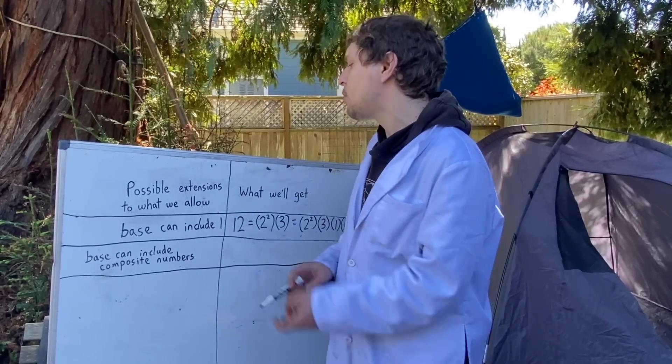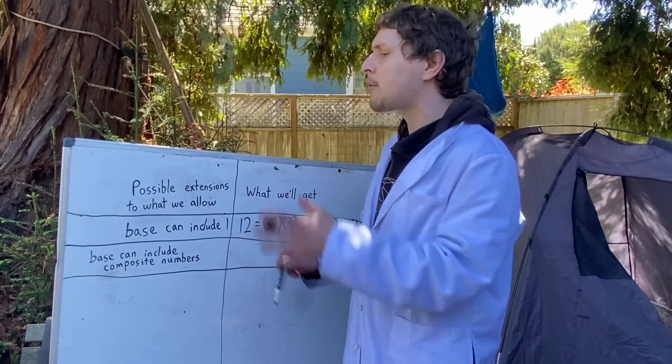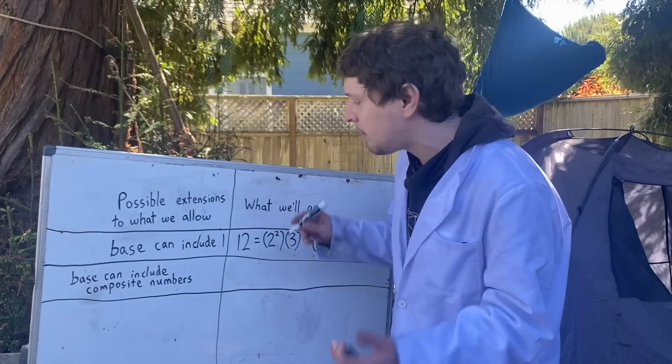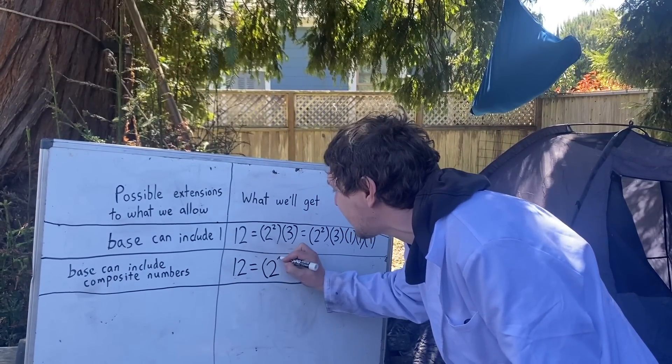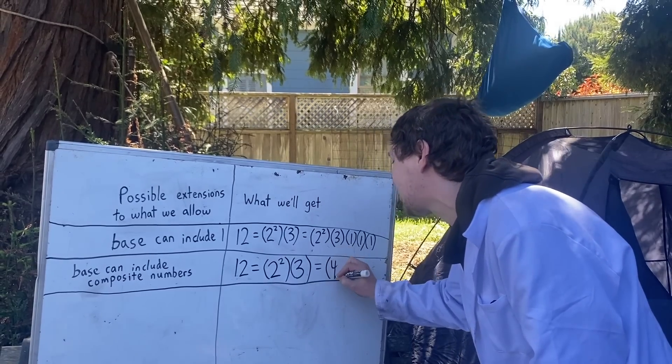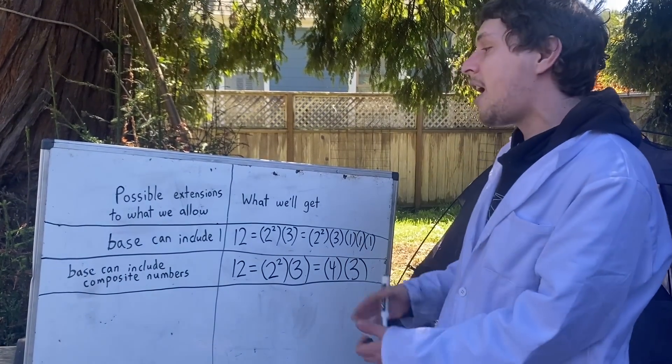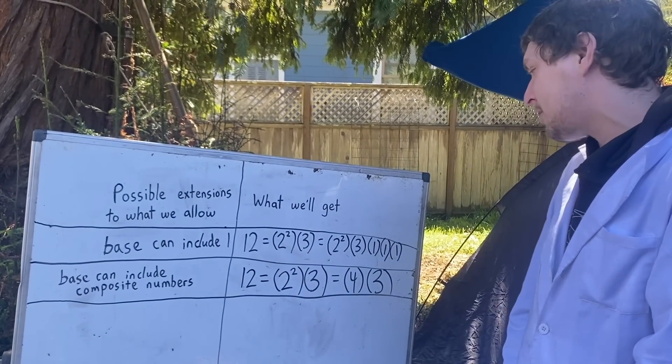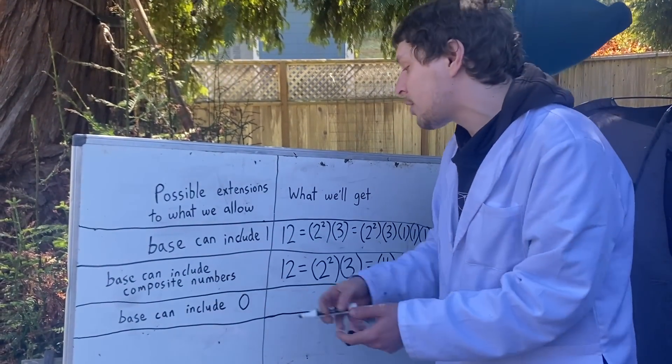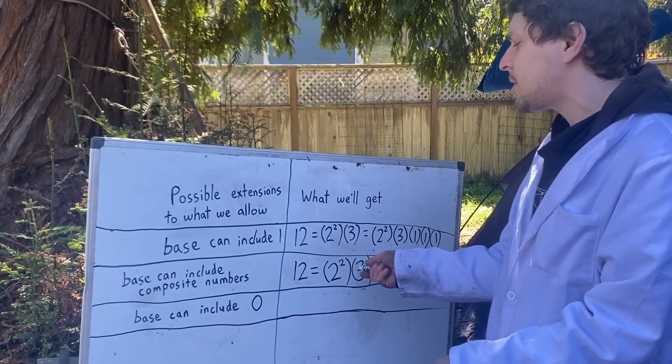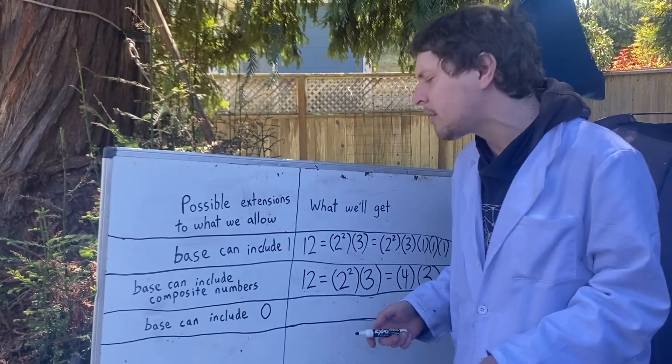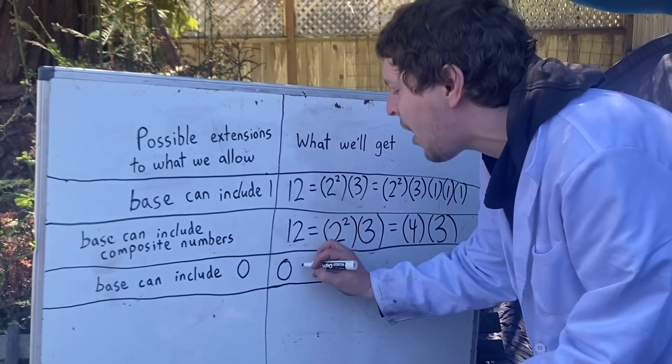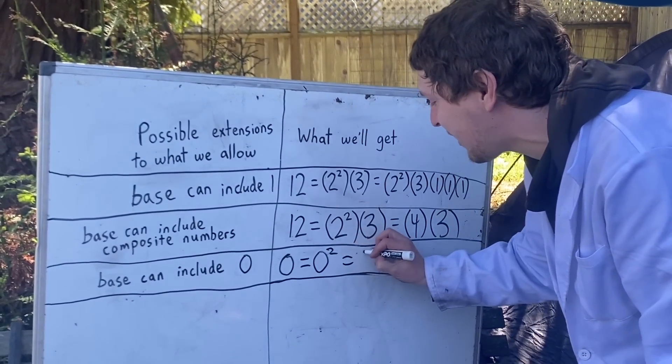So those base numbers can't include one today, but what if they included other composite numbers? Like what if I could have four to some power in the mix of the prime factorization? Well, then 12 could be written that good old way, like 2^2 × 3, or as 4 × 3. And we would lose the property automatically with any composite number as a base, because it could be rewritten as its prime factorization. And if we allowed our base numbers to include a zero, that wouldn't show up in the prime factorization of any positive number ever. So we could only try and use it to extend prime factorizations into describing zero itself. But even in that one context where it could show up, it would break that rule we wanted to preserve.